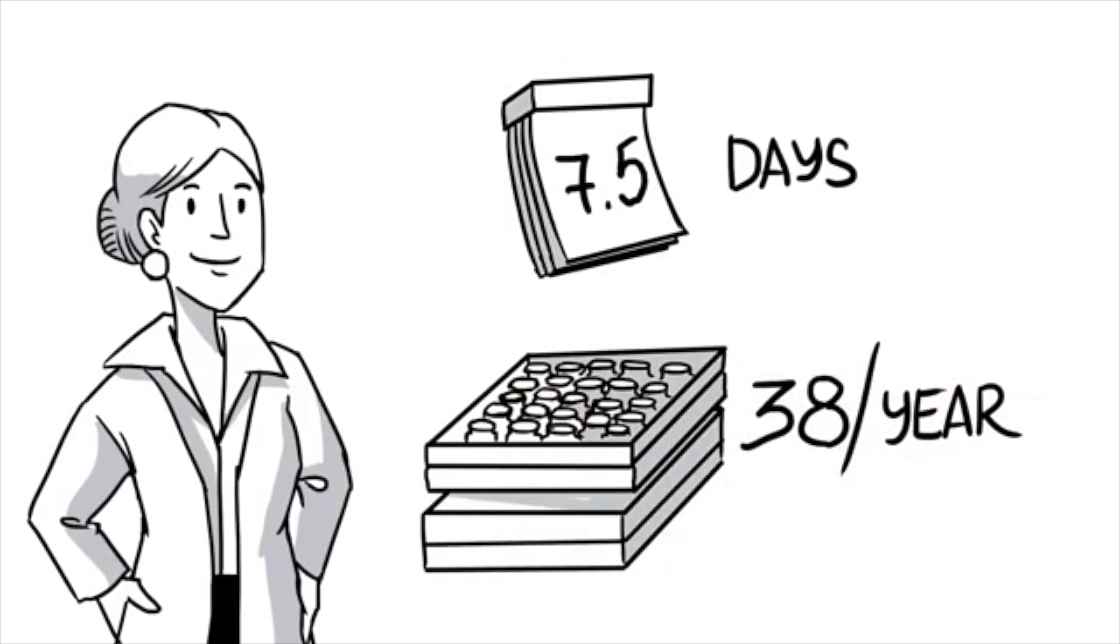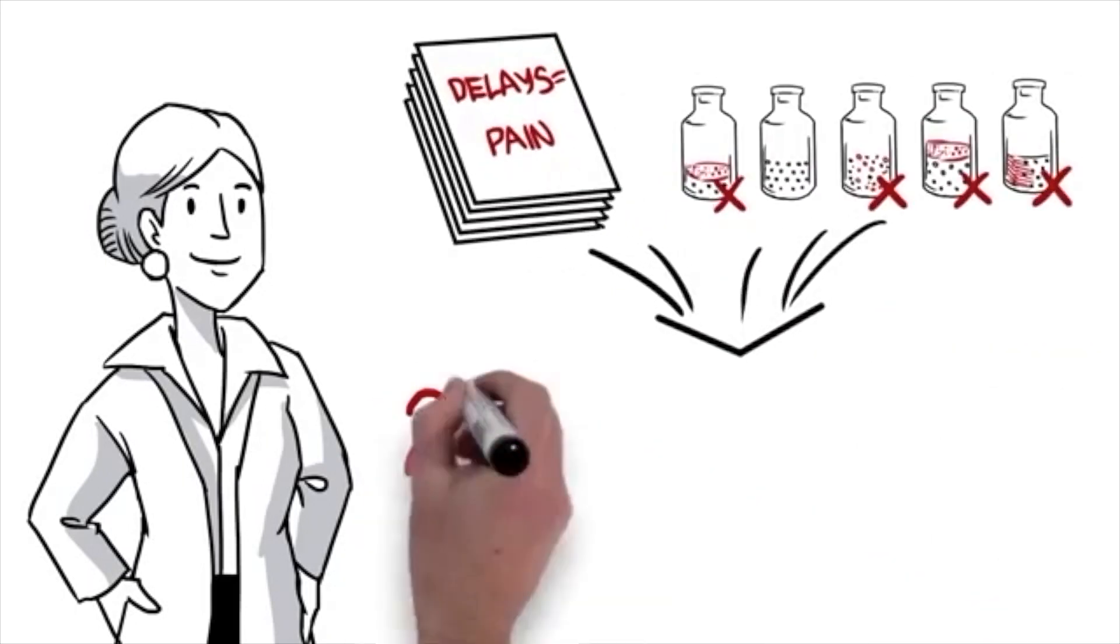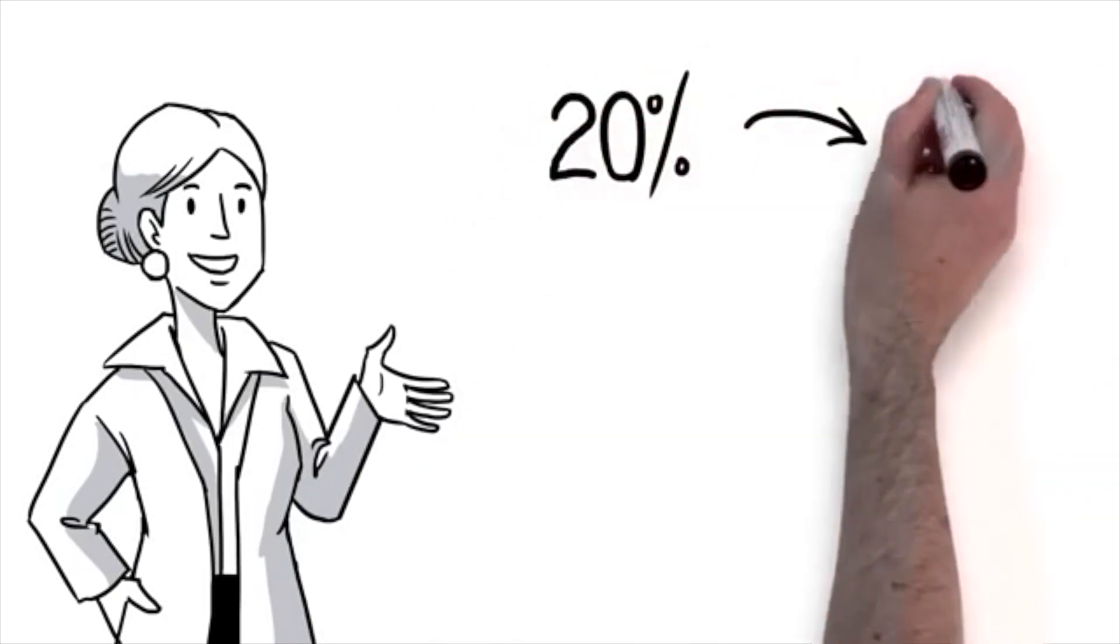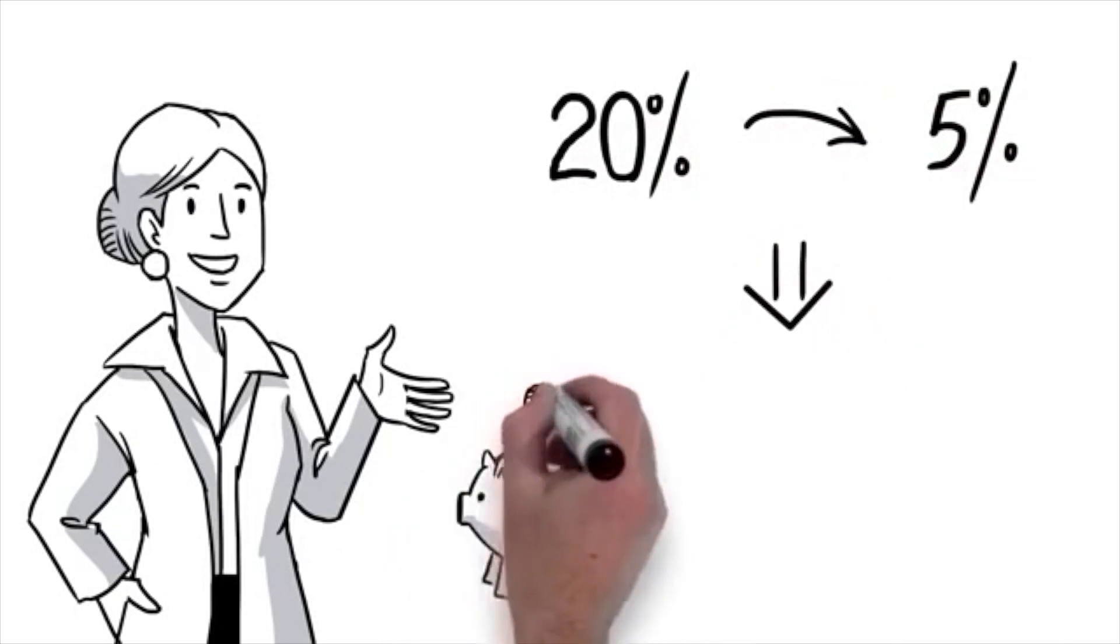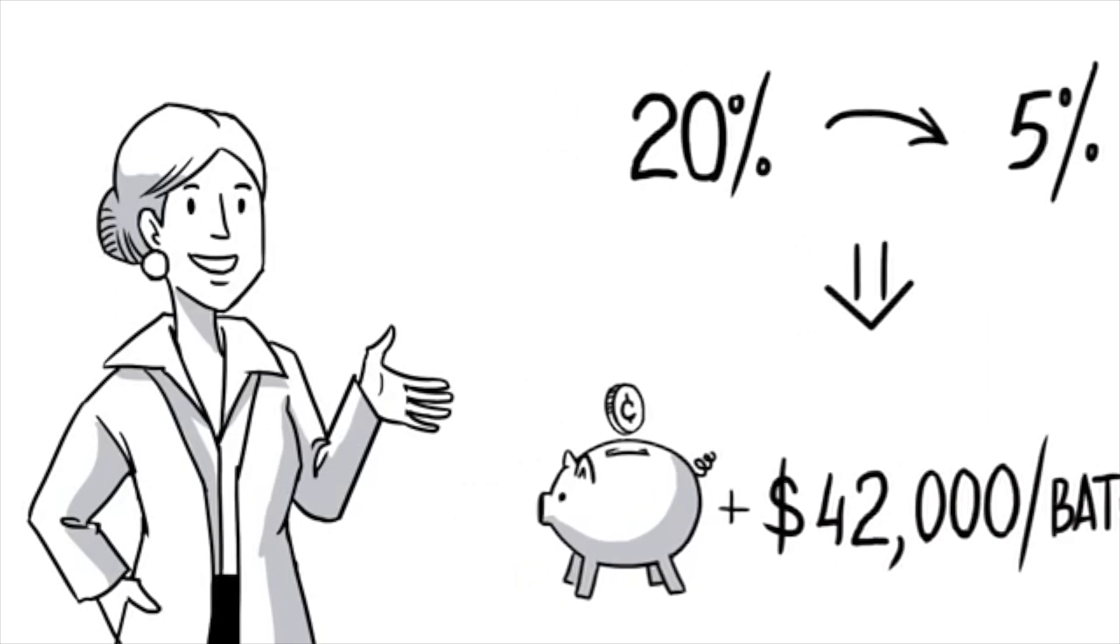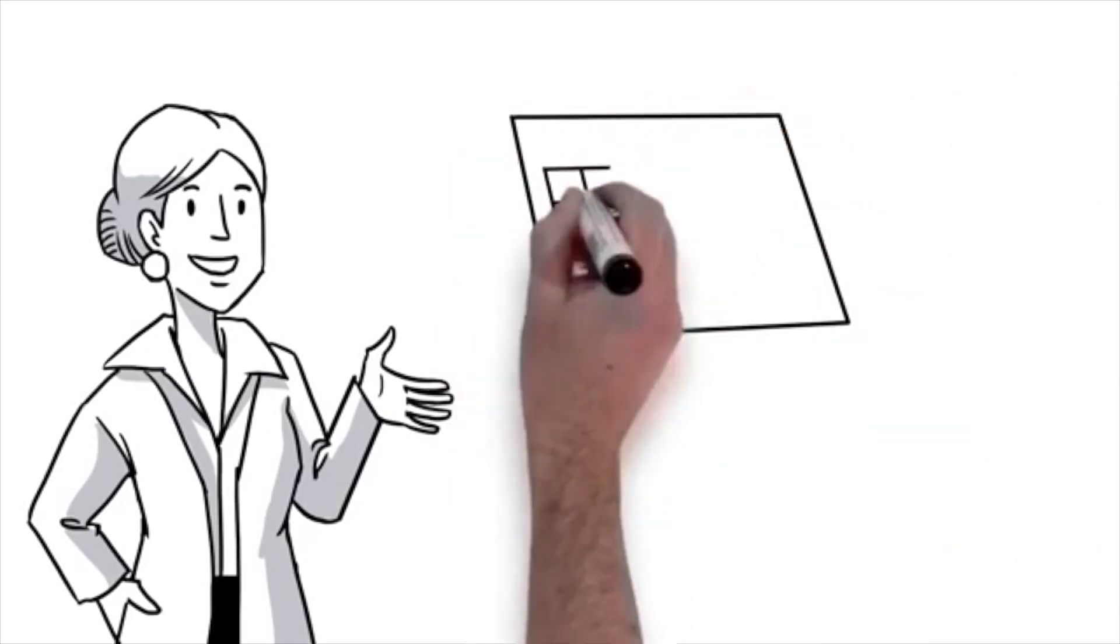Accounting for downtime, we can run 38 batches per year. Every time we lose 20% to reject, we lose $56,000. If we can reduce product variability and rejects to 5%, and data Joe shows does support it, we'll gain $42,000 per batch. The data also shows that with Controlled Nucleation Technology, they can reduce the cycle time to five and a half days.